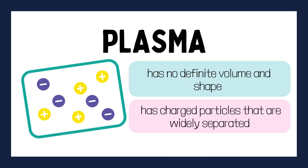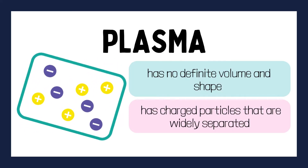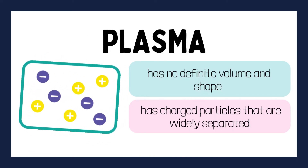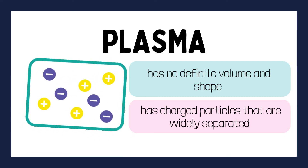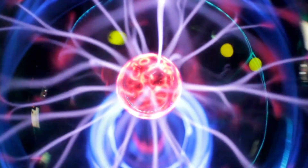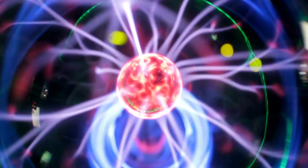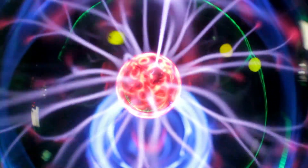Lastly, we have plasma. Like gases, plasma lacks definite volume and shape. However, it's unique due to its charged particles being widely separated.